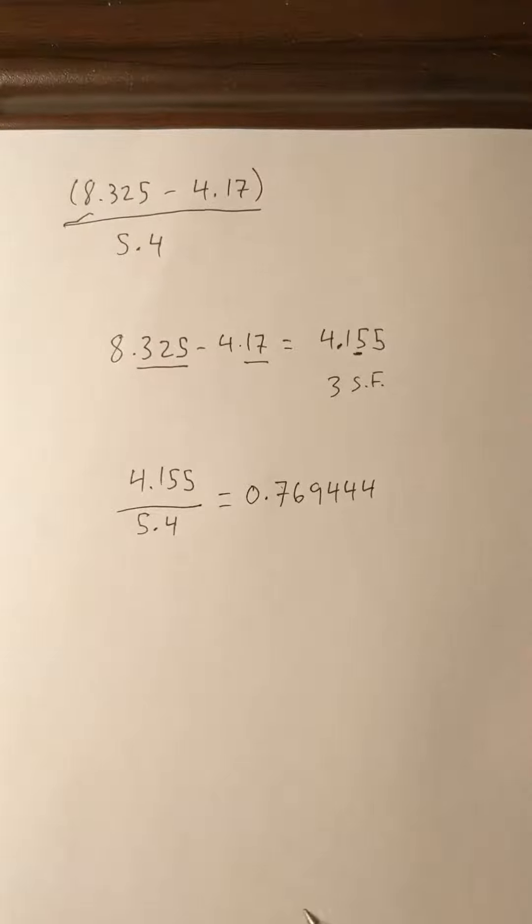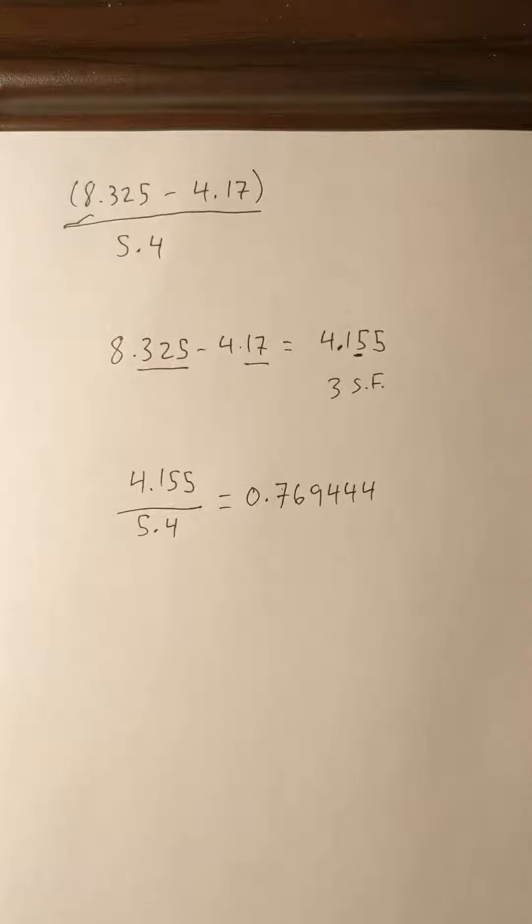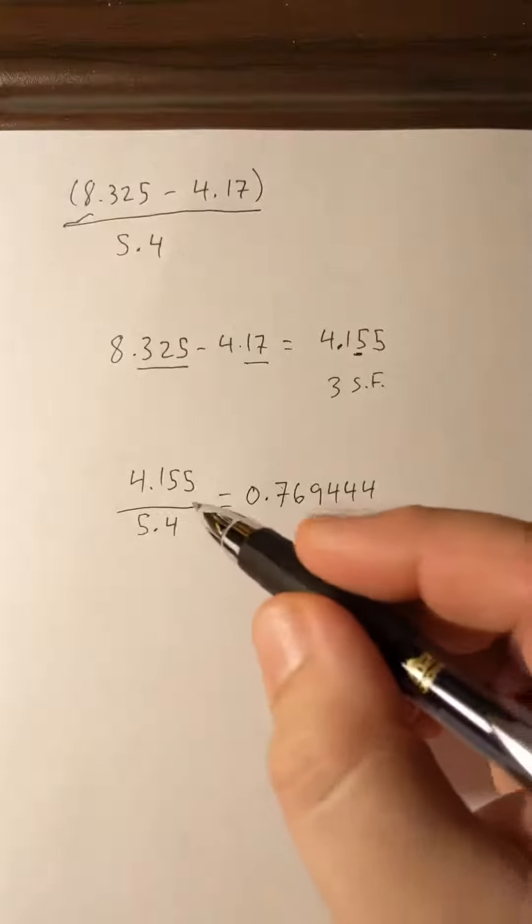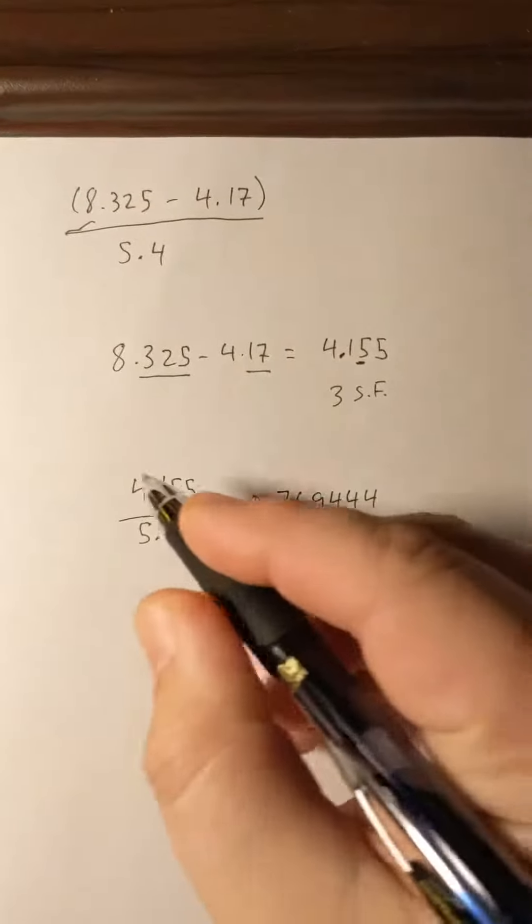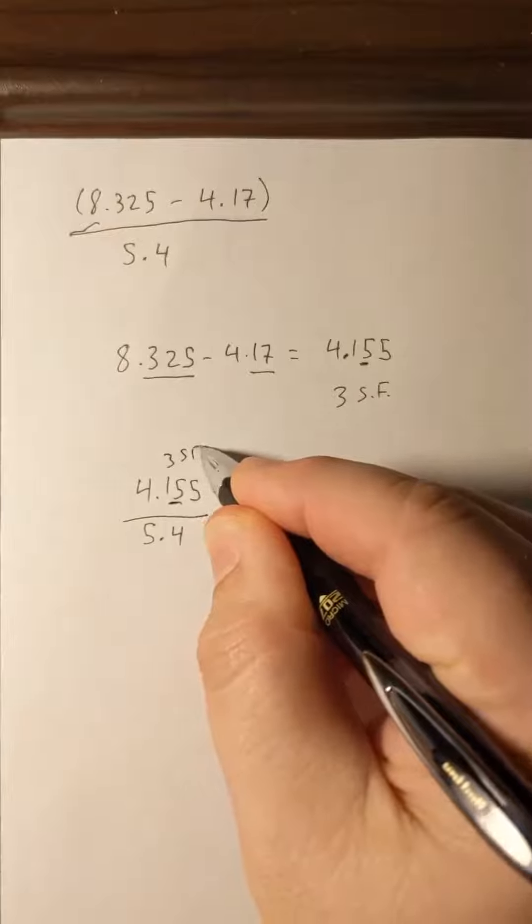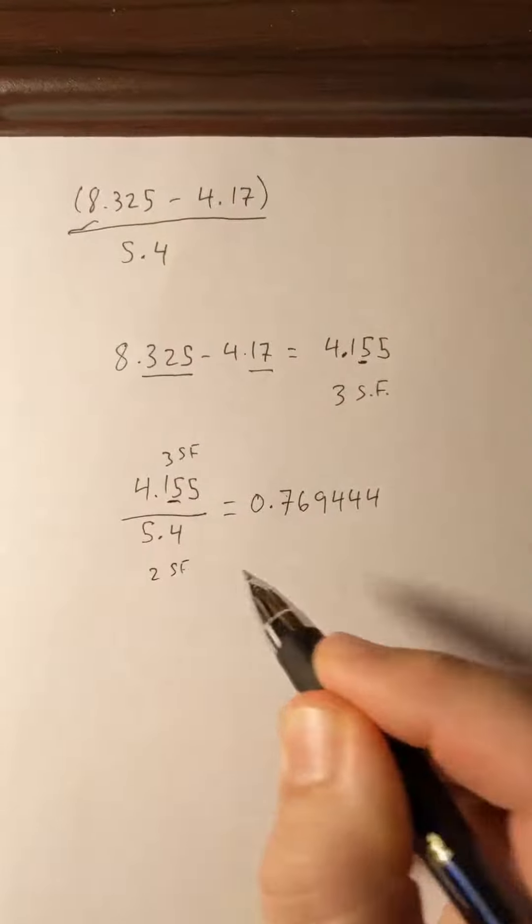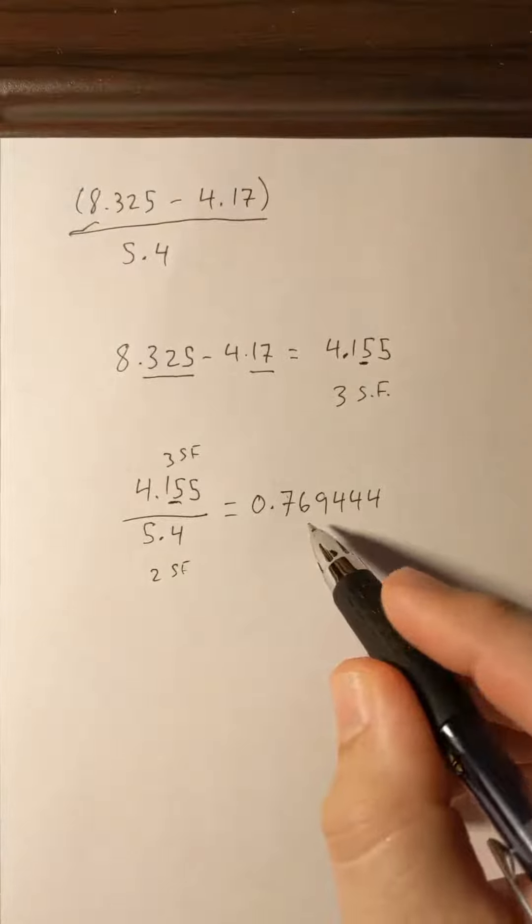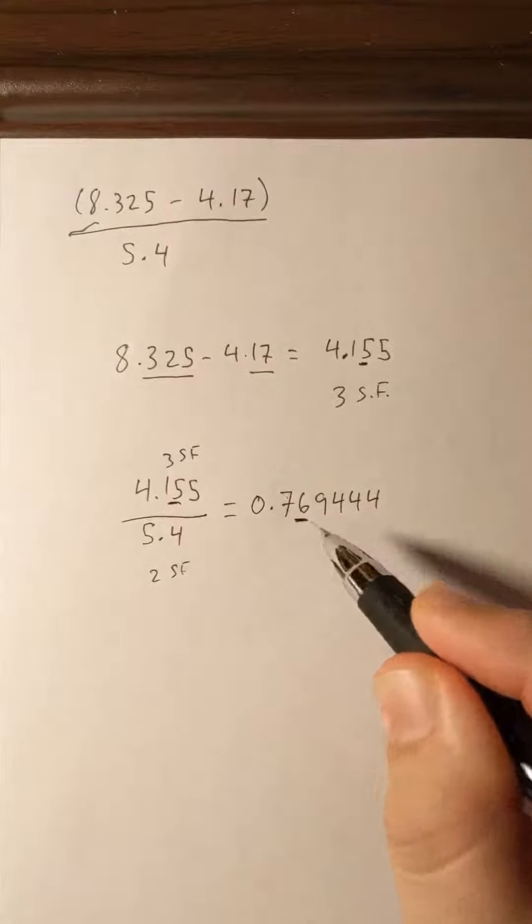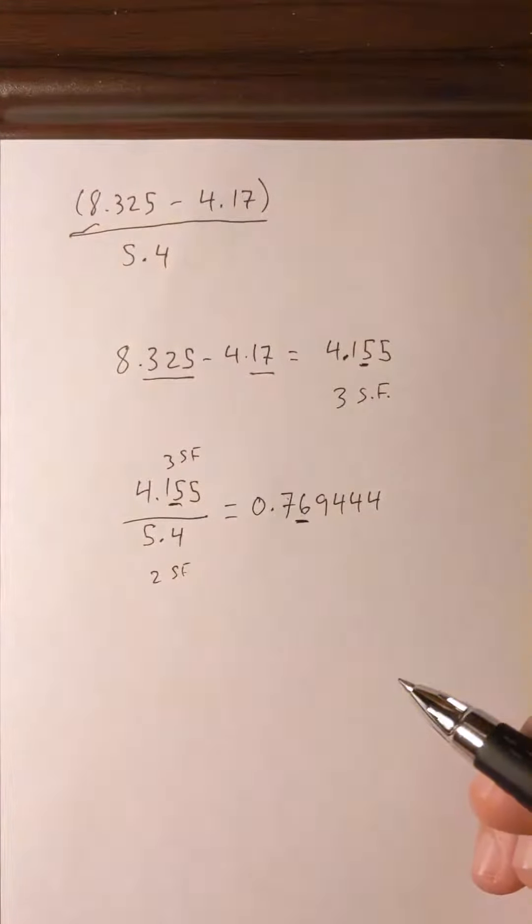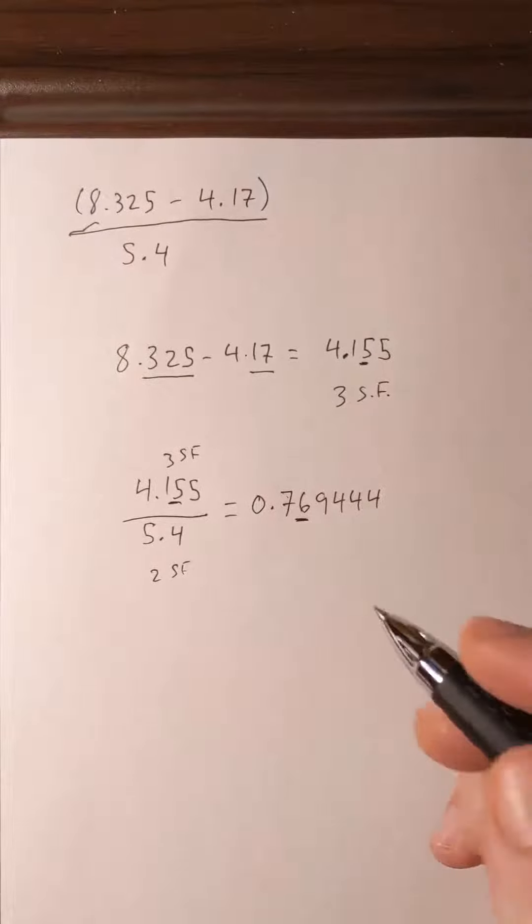To get our correct number of significant figures, because it's division it's based on total significant figures. Our top number had three significant figures while our denominator only has two significant figures. So we'll round off our final answer to two significant figures. Because the digit after the six is greater than five, our final answer will be 0.77.